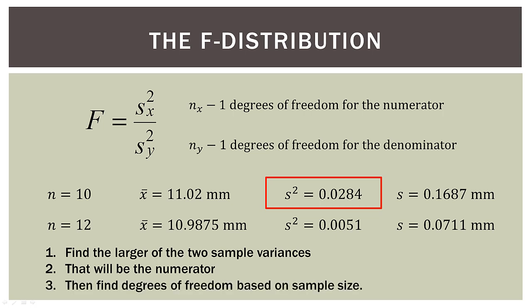Then we find the degrees of freedom based on sample size. So since that variance will be in our numerator, our sample size is 10. Therefore, the degrees of freedom in the numerator is 10 minus one, or nine.